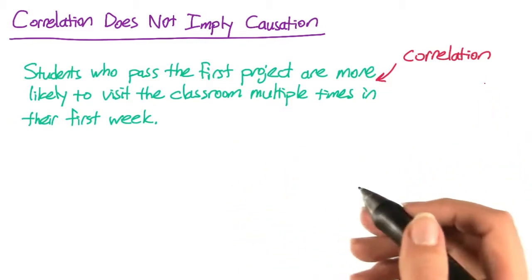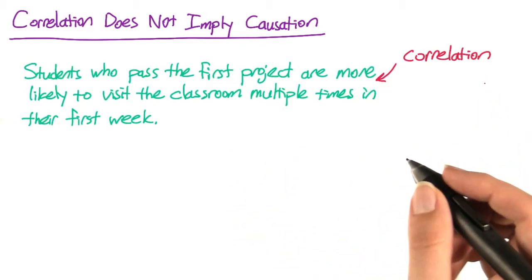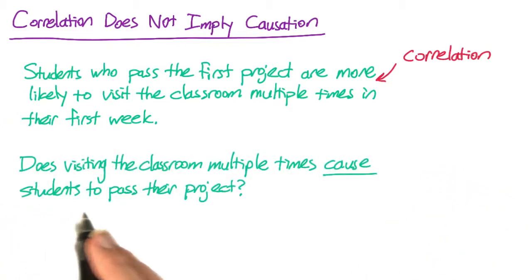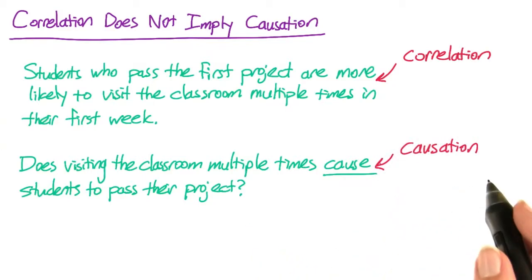Passing the first project is correlated with visiting the classroom multiple times. Does this mean that visiting the classroom multiple times in the first week causes students to pass their project? This would be a statement of causation.